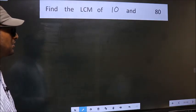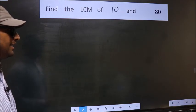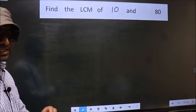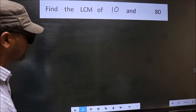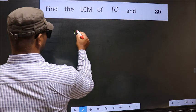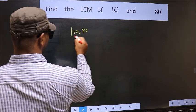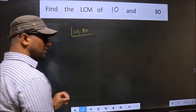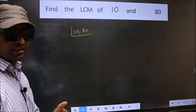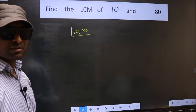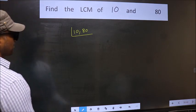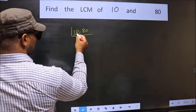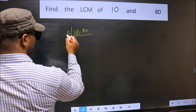Find the LCM of 10 and 80. To find the LCM, first we should frame it in this way: 10 and 80. This is your step 1. Now you should focus on the first number, which is 10. For this number, last digit is 0, so you directly take 5.